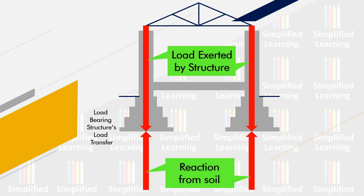There is no complexity in load bearing structure's load transmission — it is a very simple logic. In contrast, for a frame structure, the load transmission flowchart is longer and more complex: load gets transferred from slab, then to beam, then to column, then to footing, then to strata. In a load bearing structure, the load is simply taken by the load bearing wall and transmitted directly to the soil below.